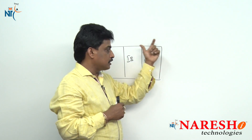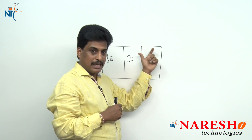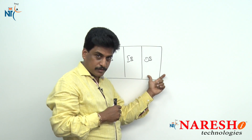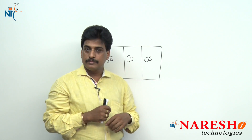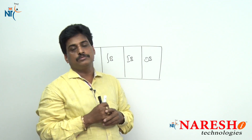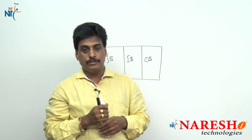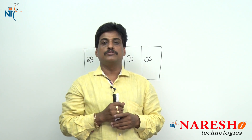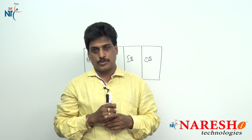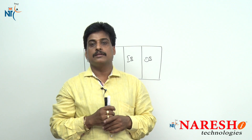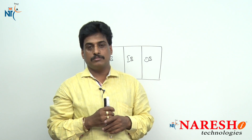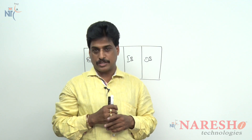So, file system organization is classified into four: boot block, super block, inode block, and data block. Real user data is stored in the data block. Thank you for watching this video. For more videos, catch me at youtube.com/Narayshati.